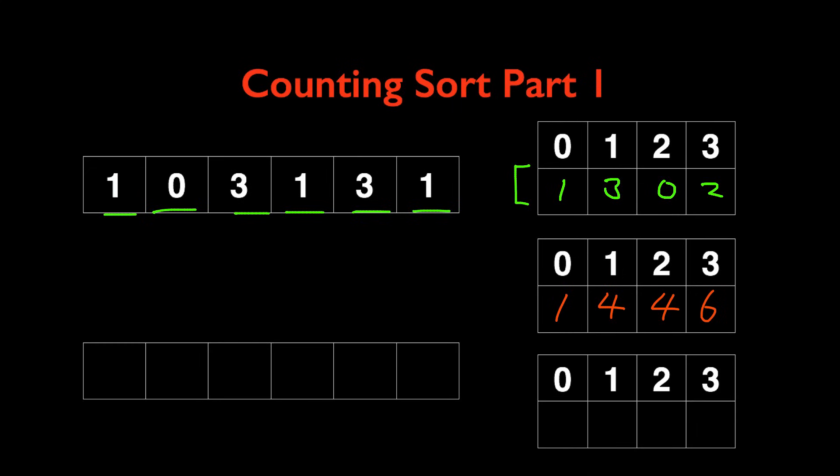After that step we have the numbers 1, 4, 4, 6 for the numbers 0, 1, 2, and 3. The next step is going to be shifting this whole array to the right by one cell.